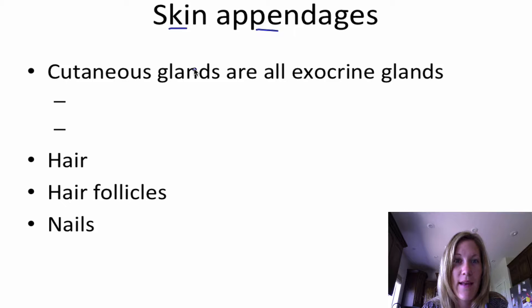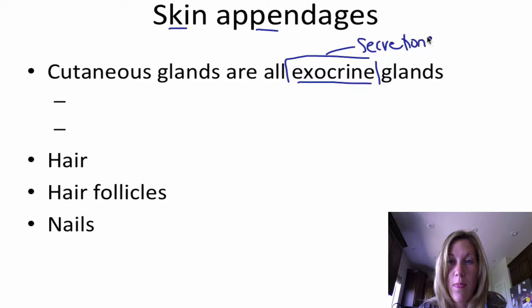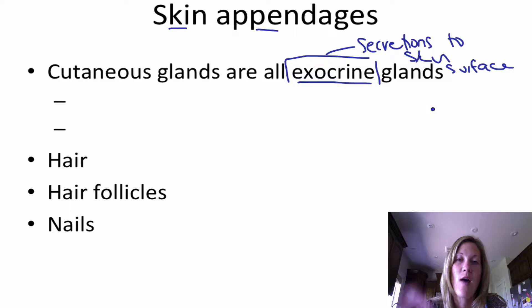Hey, this is Mrs. Reichelt and we are moving into our skin appendages. Let's start by talking about how all the cutaneous glands are exocrine glands. Exocrine means releasing secretions to the skin surface — releasing outward — whereas endocrine releases inward. So there are two major forms of cutaneous glands.